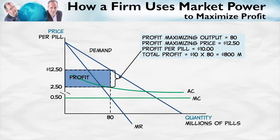To summarize: whenever we have a monopoly question, we draw the demand curve and the marginal revenue curve, then the marginal cost curve. The profit-maximizing output is where marginal revenue equals marginal cost. We go up to the demand curve to find the profit-maximizing price. Price minus average cost gives profit per unit; multiply by total units for total profit. Next time, we'll look at how the markup — the difference between price and marginal cost — varies with the elasticity of demand.